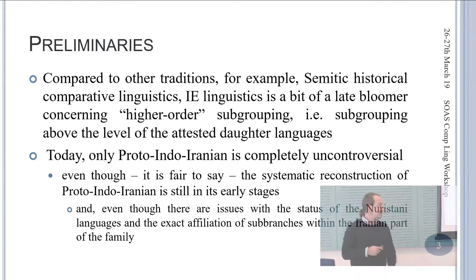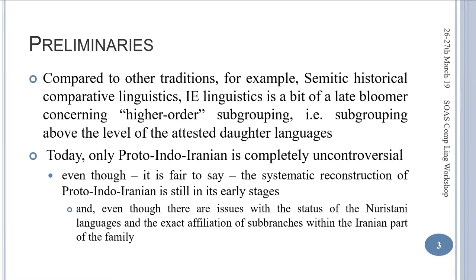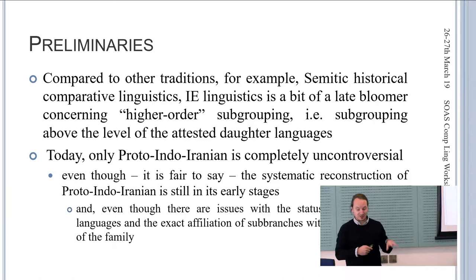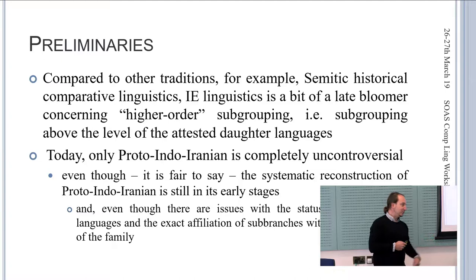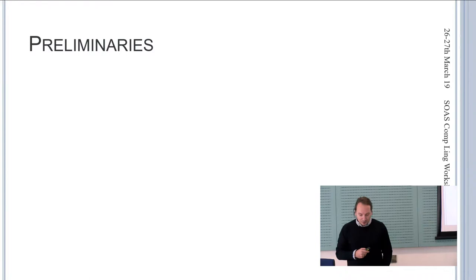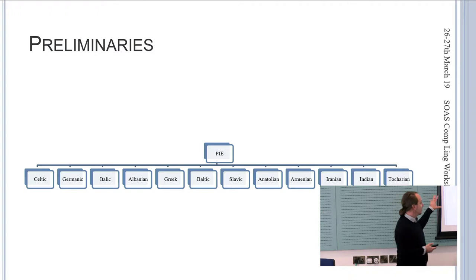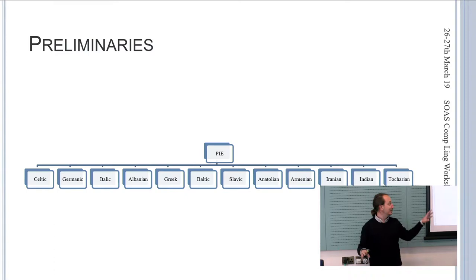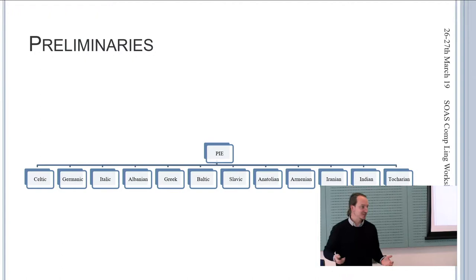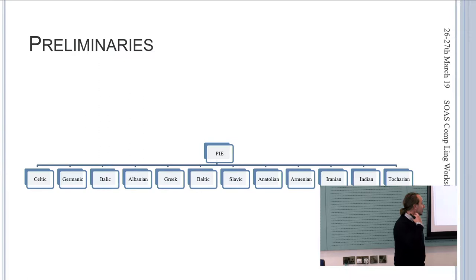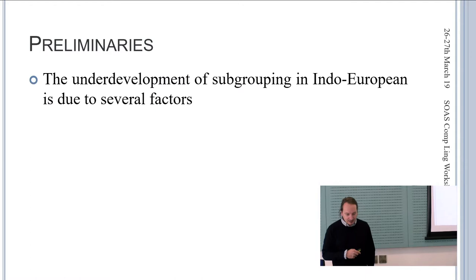There are issues with the status of the Nuristani languages and the exact affiliation of subbranches within Iranian. If you look at current handbooks, you basically get this 'big bang tree' — everything out of Indo-European all at once — which of course cannot be possible and is rather strange. We are one of the historical fields that still get away with presenting our tree like this, and we should not get away with that.